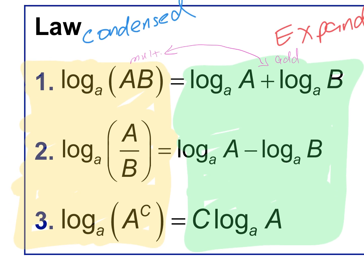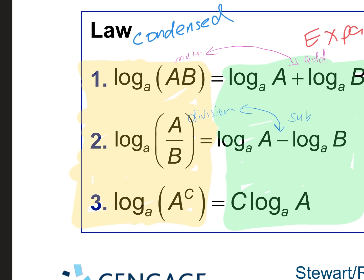Look at number two — what's happening between A and B? Division. So if something is already condensed and it's being divided, when you pull it apart, the division becomes subtraction, and vice versa. And then lastly, if you have this C — it's an exponent — it's going to become a coefficient. Exponents become coefficients and coefficients become exponents.